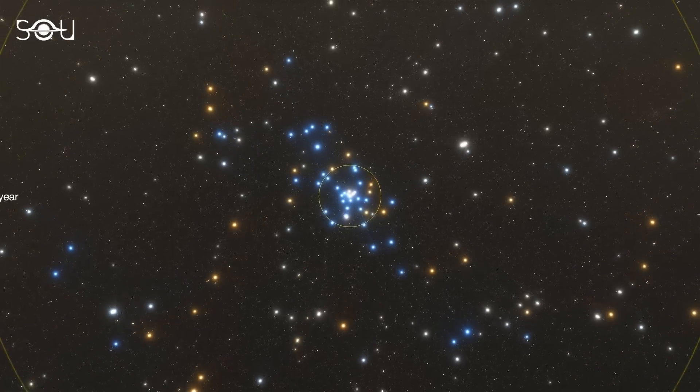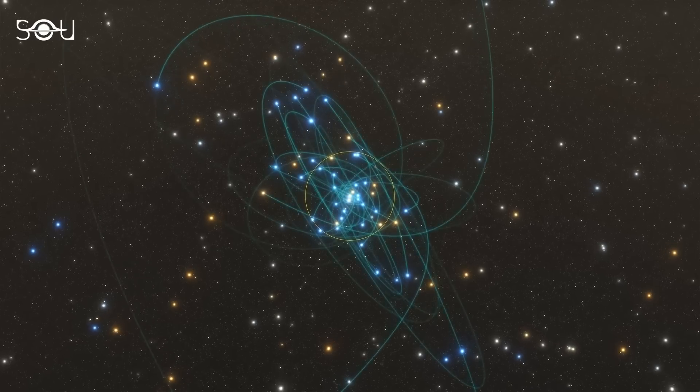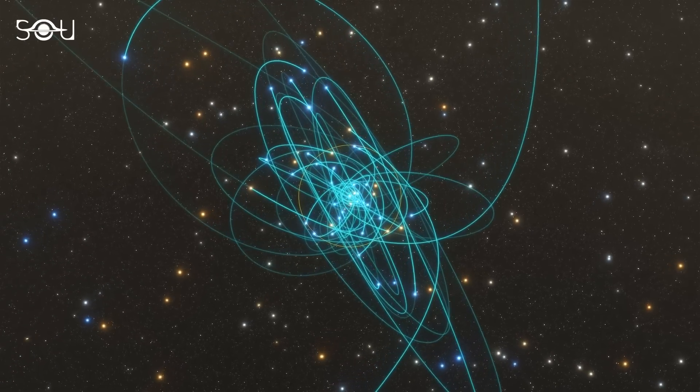However, this region is not just home to stars. Several smaller structures are also orbiting the black hole, one of which is X7.